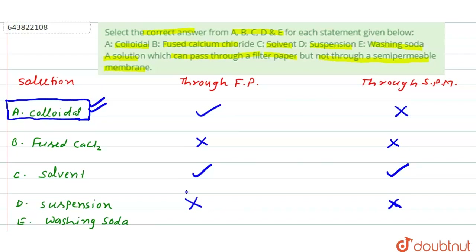Washing soda (Na₂CO₃·10H₂O) dissolves in water to form a solution. The solute particle size in washing soda solution is very small compared to colloidal particles. Therefore, the solute particles in washing soda solution can pass through filter paper as well as the semi-permeable membrane.